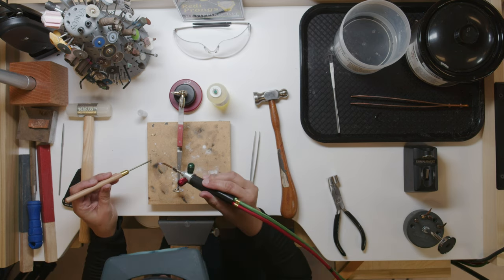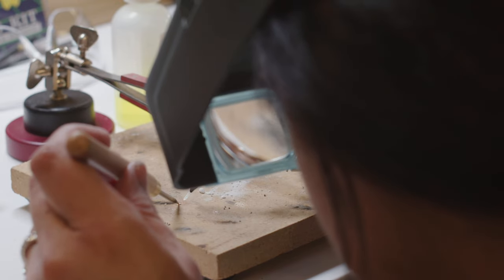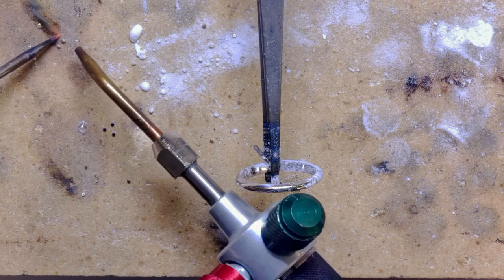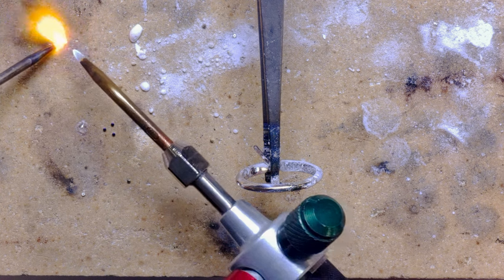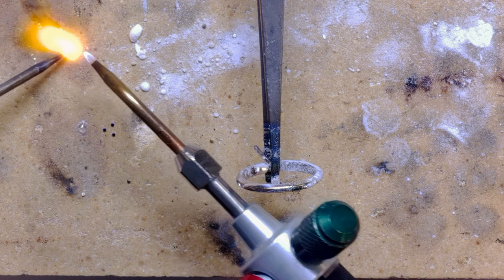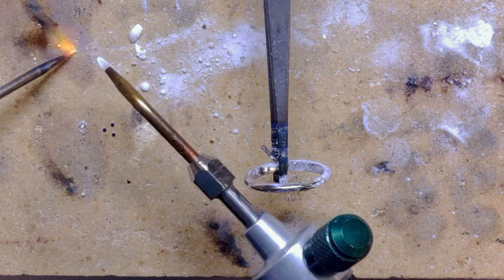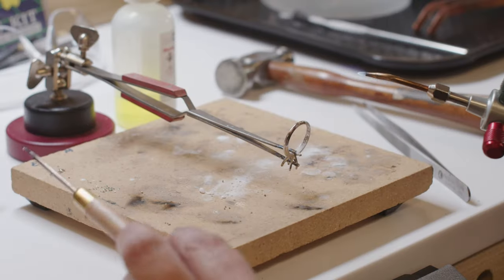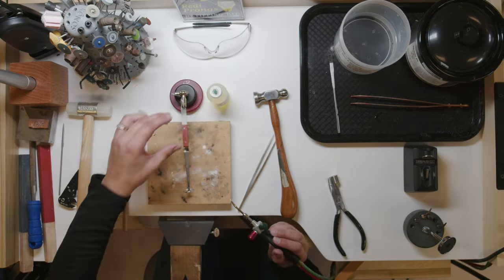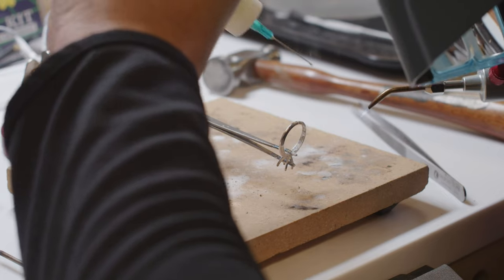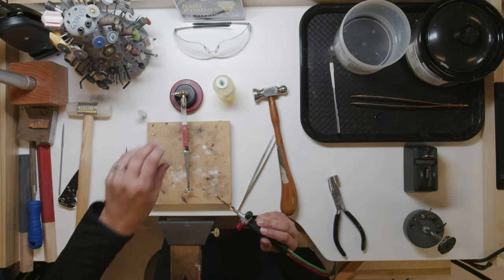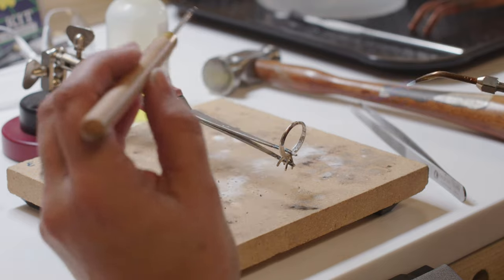Now we're going to use a hard solder when you're doing a sizing. A little trick: if you're having trouble picking up your solder, you can dip the tip of your pick in boric acid and it'll make it a little stickier to help pick up the solder. We're going to add a little drop of flux to help our solder flow. When you heat up your ring, you heat up both sides.